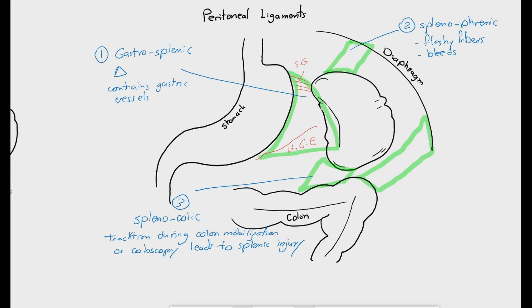Number four is the phrenocolic ligament between the splenic flexure and the diaphragm. Although it's not attached to the spleen, the spleen lies directly on it like a shelf.